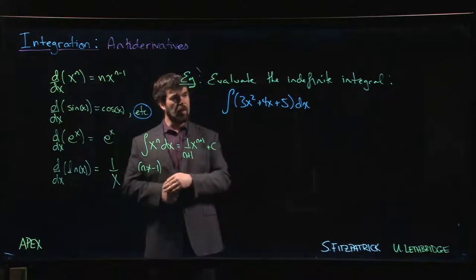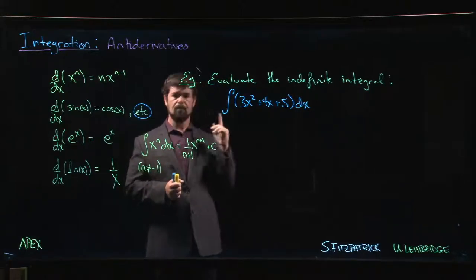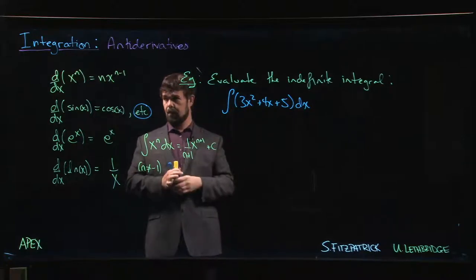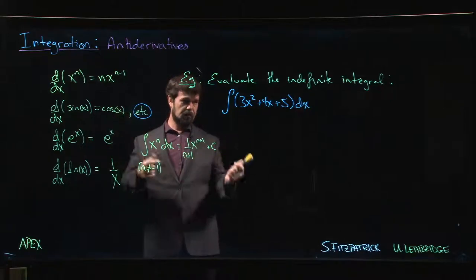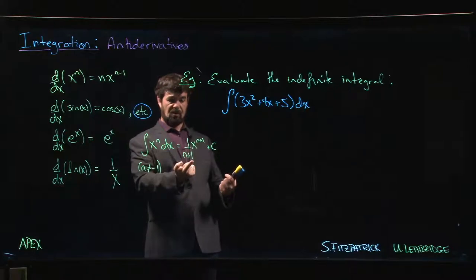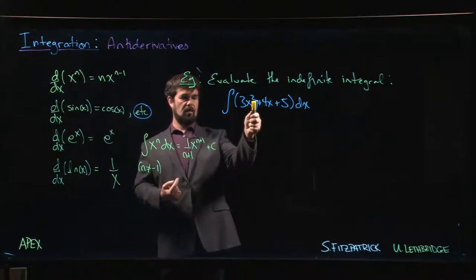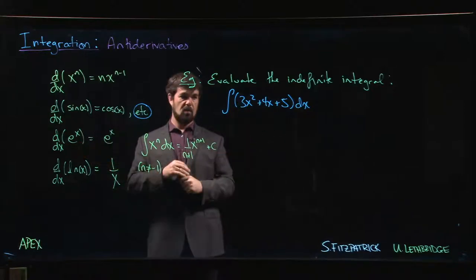And we say, 3x squared, is that the derivative of something? And we think about it, yeah, it's the derivative of x cubed. We've seen that one before. Put n equal to 3 and it's here on the list, so we can go the other way. If you forgot that, you have this as a backup. We add one to the exponent, we get three, we divide by three, three over three gives you one, you end up with x cubed.